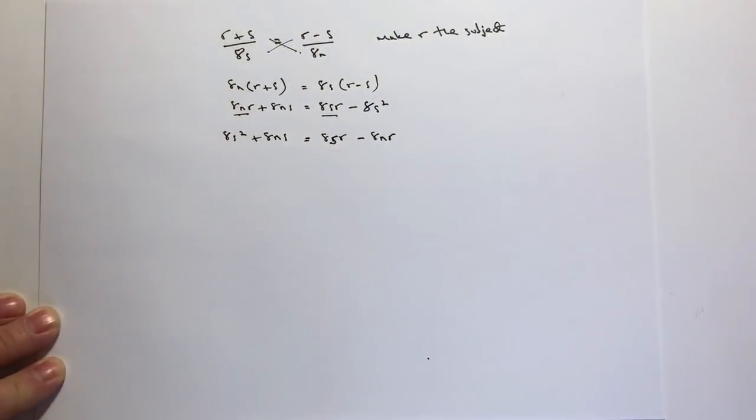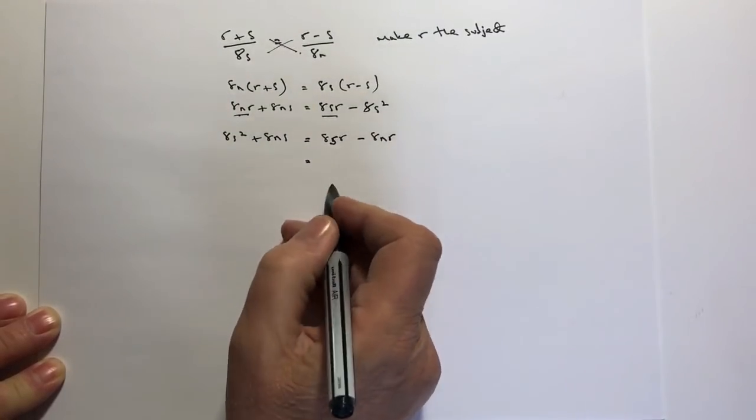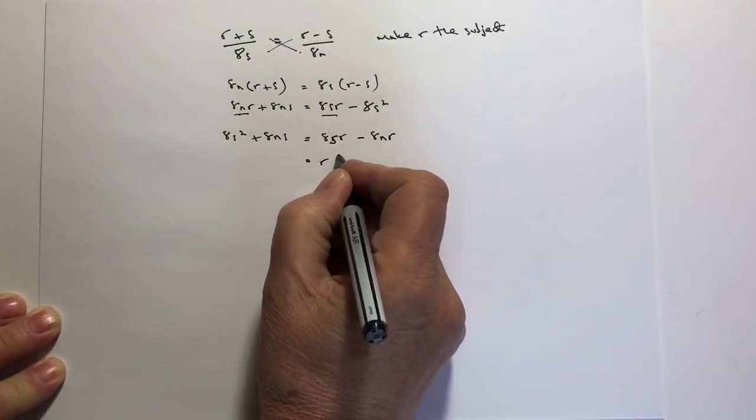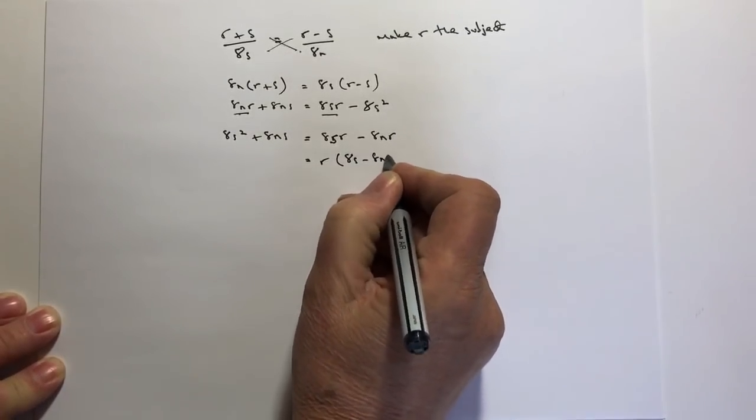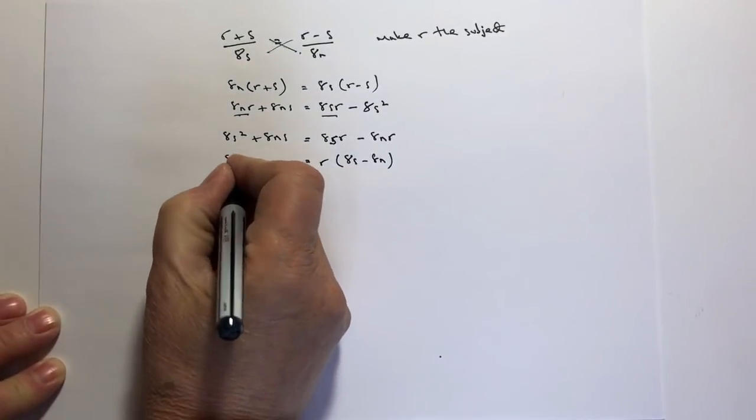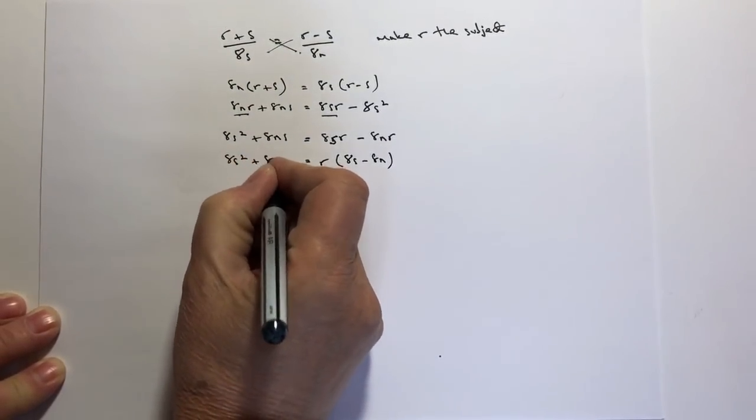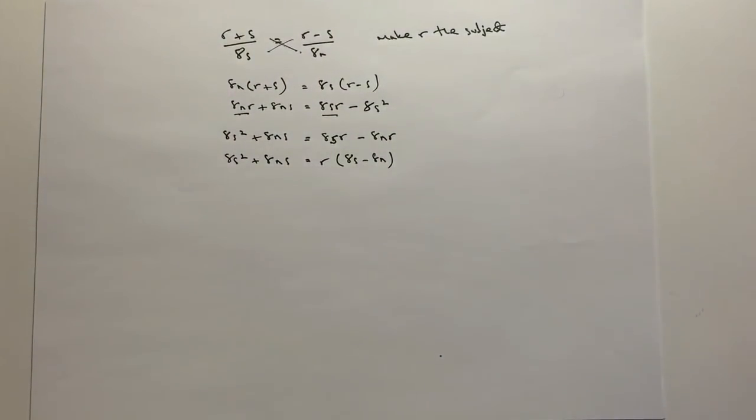OK, when I've done that, it allows me then to factorise for the value of r. So I could rewrite this side of the equation as r times 8s minus 8n. OK, and that's going to equal to 8s squared plus 8ns. There's an awful lot of 8s knocking around in this particular question.